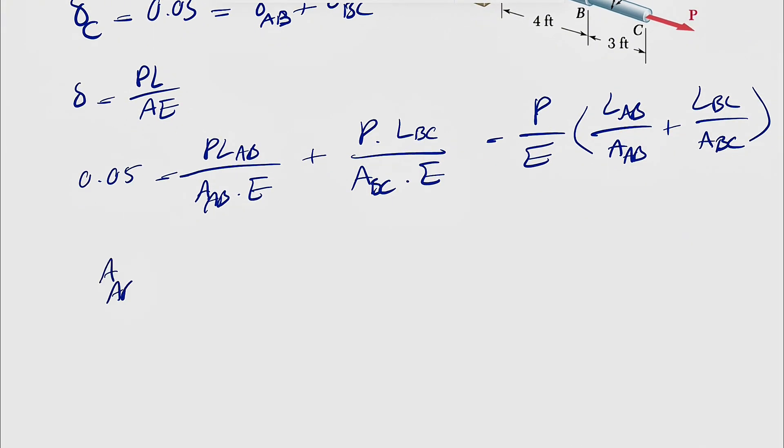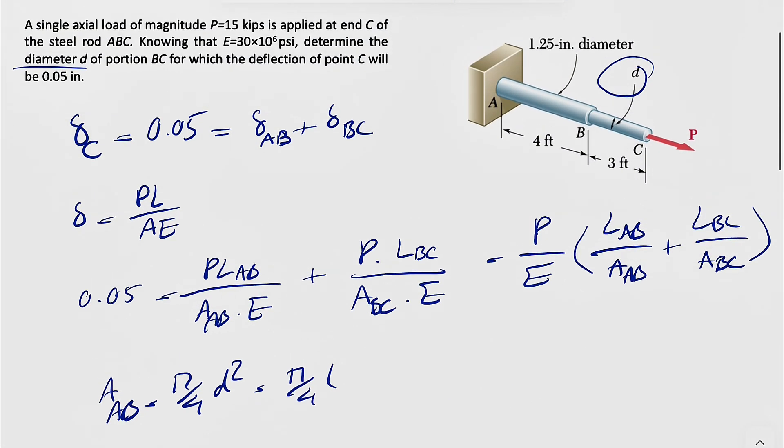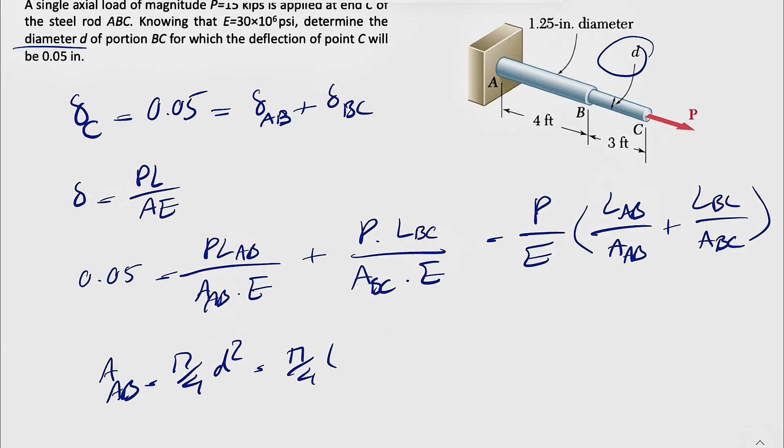Area of BC is unknown, but area of AB is pretty easy, pi over 4D squared. So pi over 4D, we have 1.25 inches, so if we just calculate this, we're going to get the area based on inches squared.